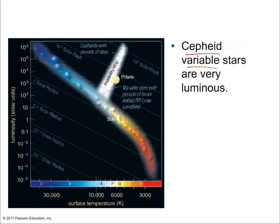Cepheid variables are dying red giant stars of a particular type that have an unstable thermostat due to unstable rates of nuclear fusion and gravitational contraction — so they pulsate, getting brighter and dimmer. The rate is usually a couple pulses per day or per week. The name refers to the constellation where they were first discovered. There's a direct relationship between the pulse rate and the true luminosity of the star.